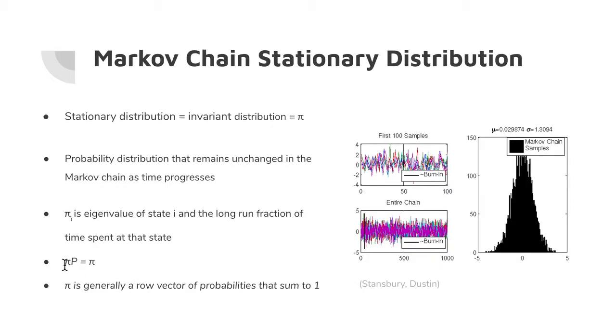The stationary distribution doesn't change no matter how many times we multiply it by our transition matrix P. This formula might look a little familiar. It's similar to how we find eigenvectors and eigenvalues because the stationary distribution vector pi is the eigenvector whose eigenvalue is 1. So pi times transition matrix P equals pi times 1. Pi is generally a row vector, and the probabilities in pi will sum to 1.